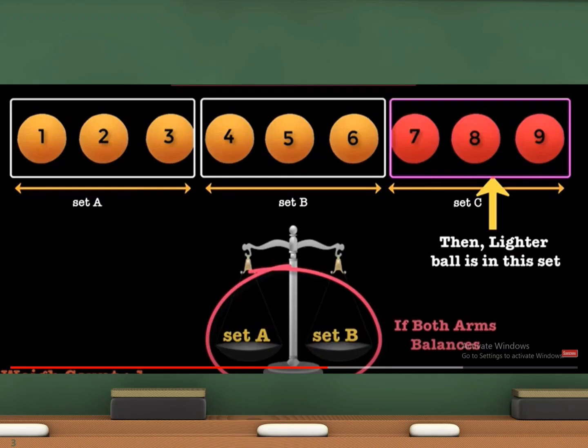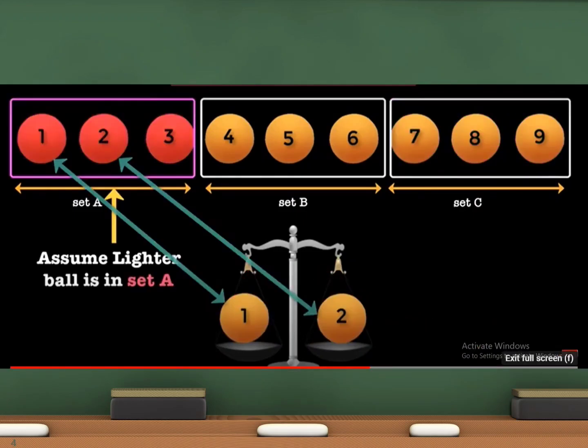Or, if one arm of the physical balance comes up, then the lighter weight ball lies in that arm.